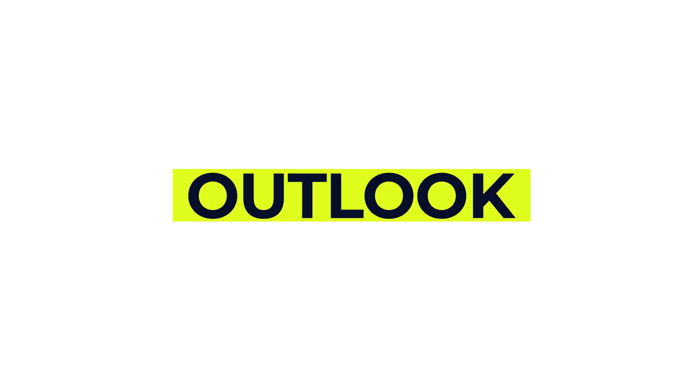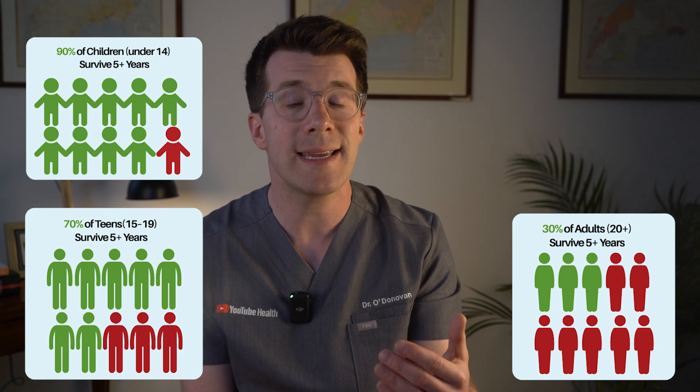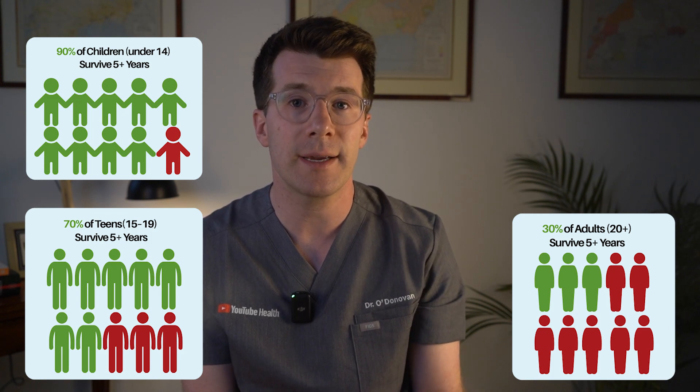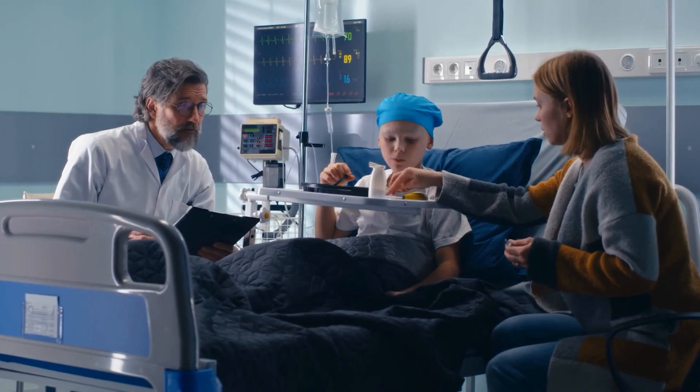ALL can be a really serious condition, but outcomes have improved dramatically, especially in children. More than 90% of children under the age of 14 survive at least five years after diagnosis. Around 70% of teenagers aged 15 to 19 survive five years, and about 30% of adults over 20 are alive five years after diagnosis. Children who remain in remission for five years are often considered cured. Whilst long-term remission is less common in adults, newer treatments are helping more people to live longer.